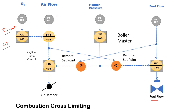Both the high selector and low selector are configured in the DCS to achieve cross-limiting. The high selector always allows more air into the furnace and the low selector always allows less fuel into the furnace, so there is no chance of accumulation of fuel.